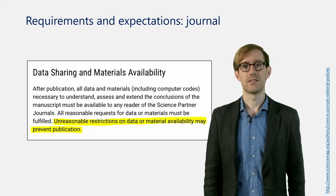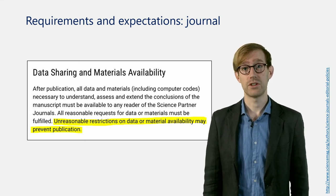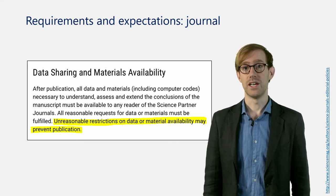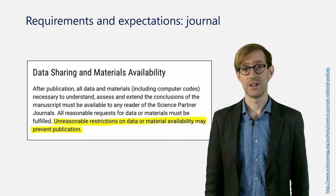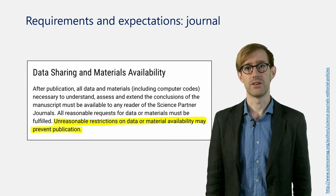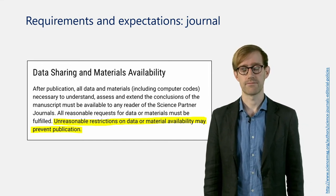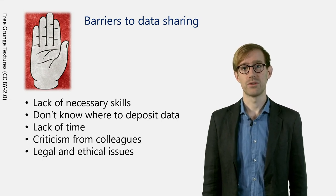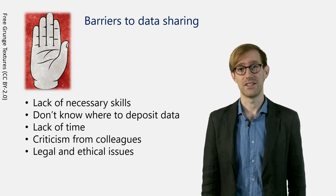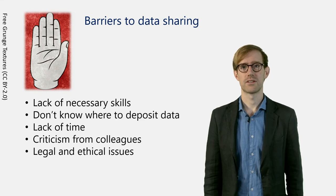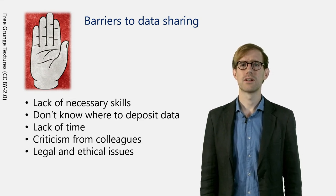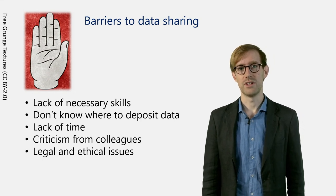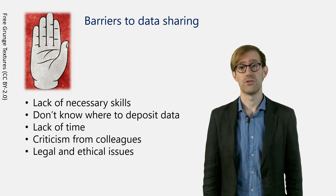Being able to access the data is of benefit not only to the author and the scholarly community as a whole, but from the journal's point of view it is also an important way of ensuring that the results are not fabricated or that the study is in any other way fraudulent. Although more and more scholars see the importance in sharing and accessing data, less than every second researcher practices it — how can this be? There are a number of overarching obstacles or chief worries that many researchers struggle with when it comes to sharing data.